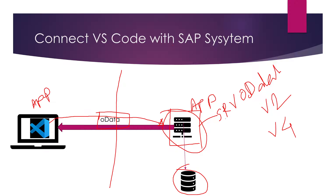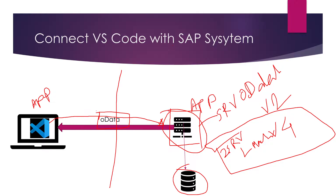The back-end developer develops their OData service, and as a front-end developer you start developing software. When you need the service — for example, the service name is ZSRV — it will show all master data. You are asked to create software where you can see all the master data, so you need this service. The only way to get this service is through the OData service.